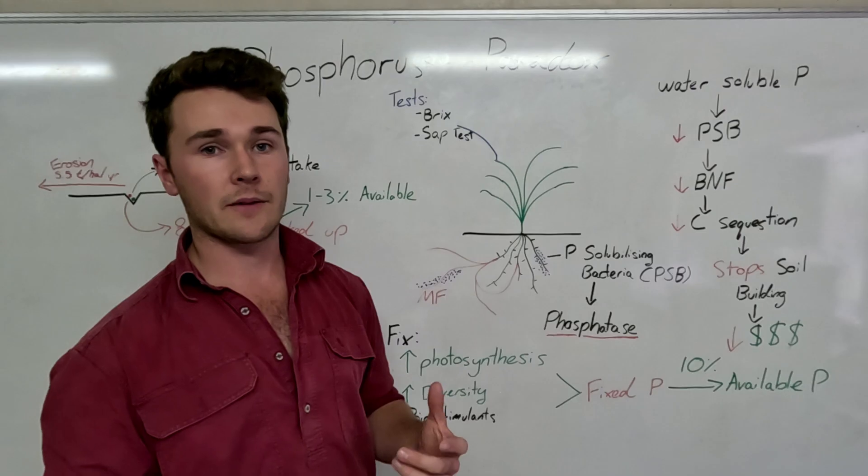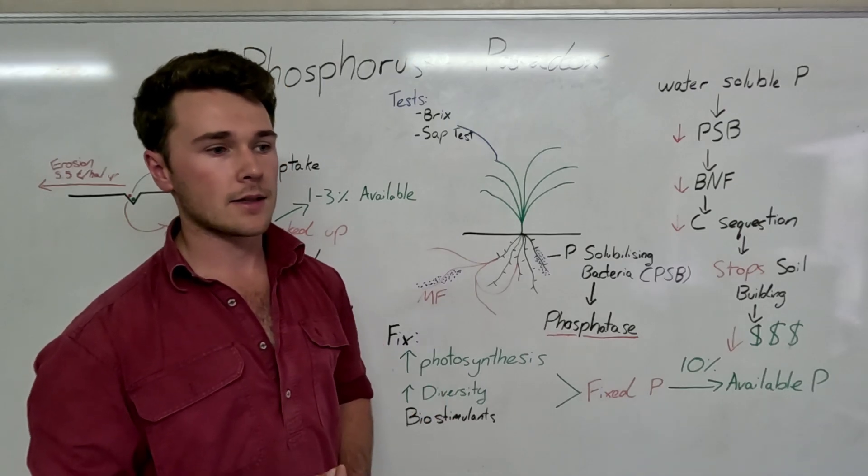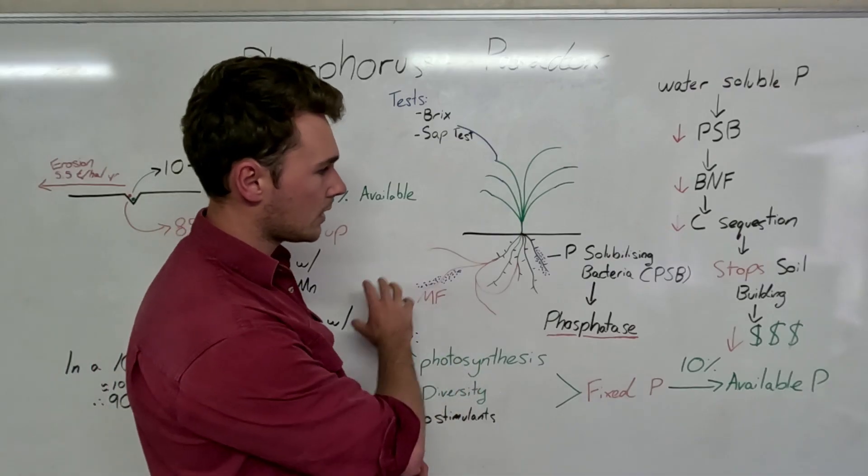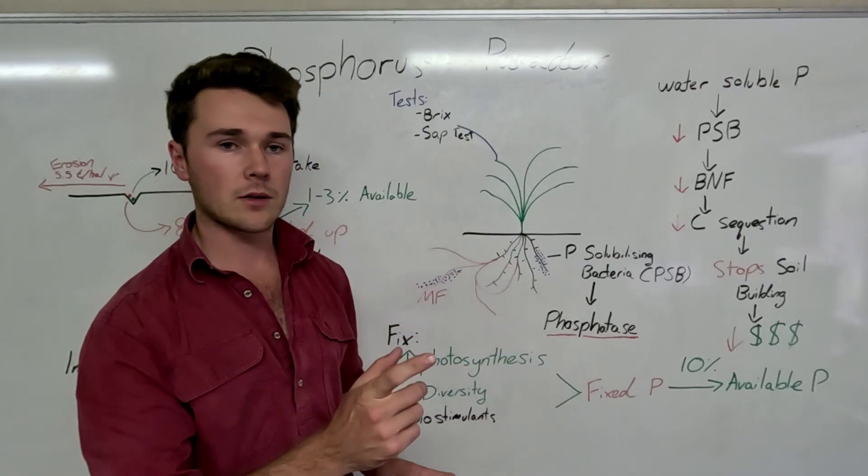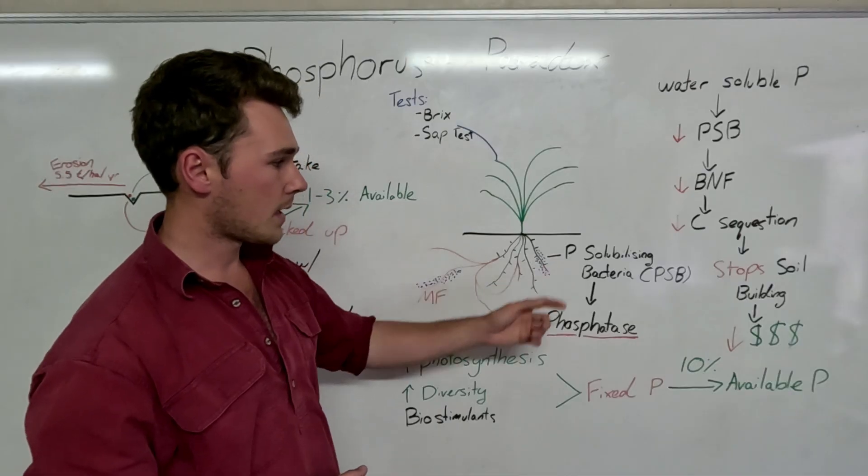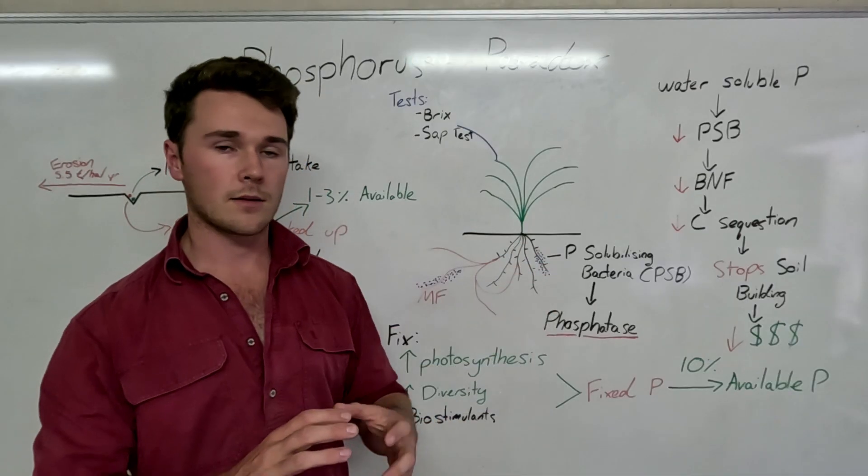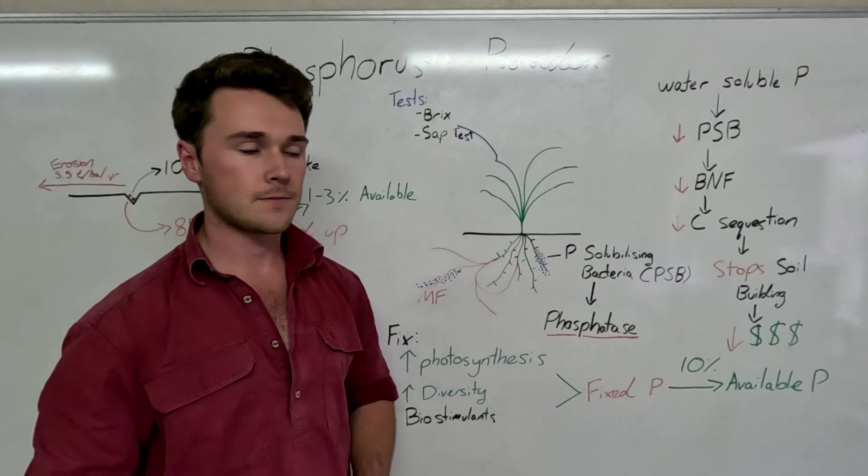Another really good way to supply phosphorus is rock phosphate. And that will basically increase the amount of total phosphorus, but also allow for our microbes, specifically the phosphorus solubilizing bacteria to then increase in population and solubilize that.